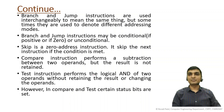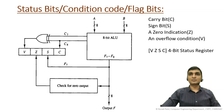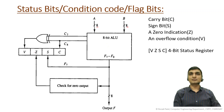Now let's see how compare and test set the status bits, also called conditional codes or flag bits. This is the block diagram showing an 8-bit ALU taking two 8-bit operands. There are four status bits: the carry bit C, the sign bit S, the zero indicator Z, and the overflow V.